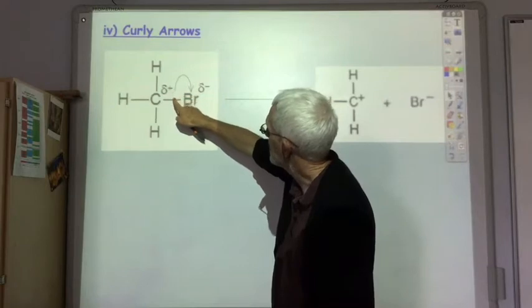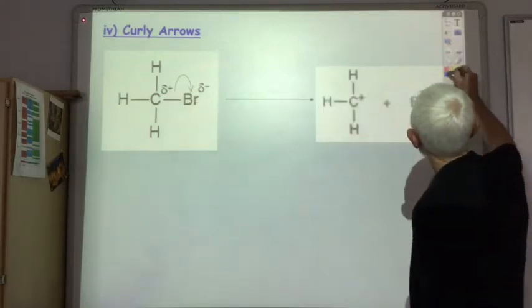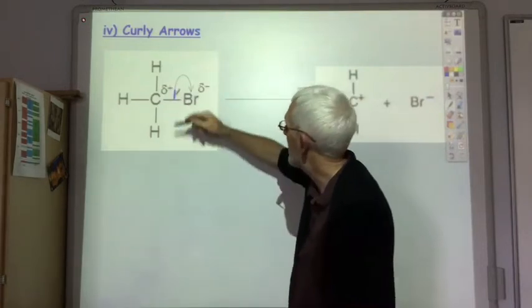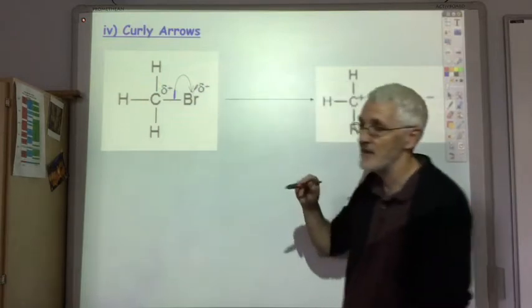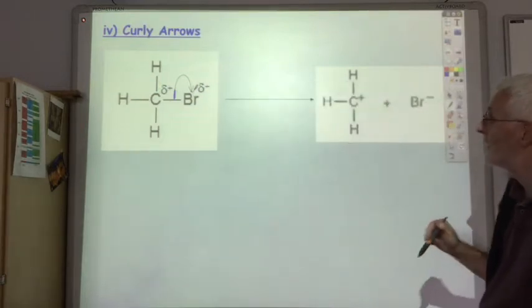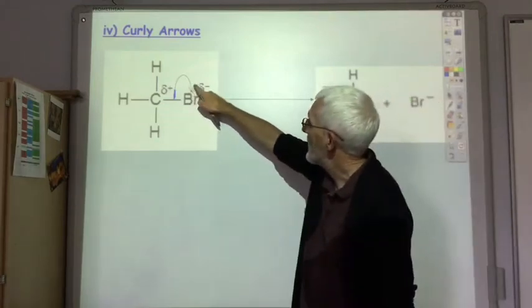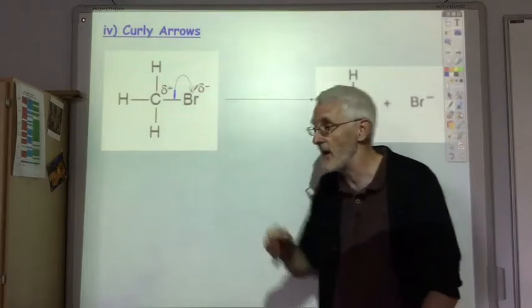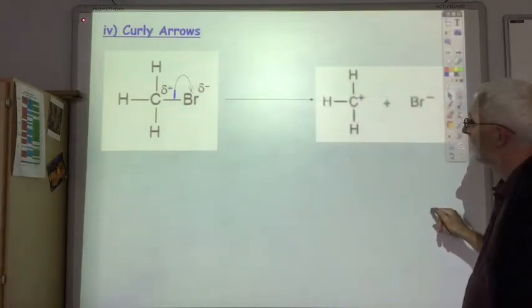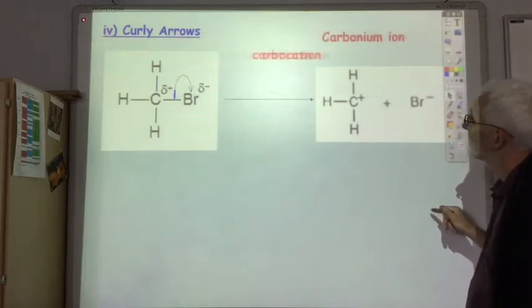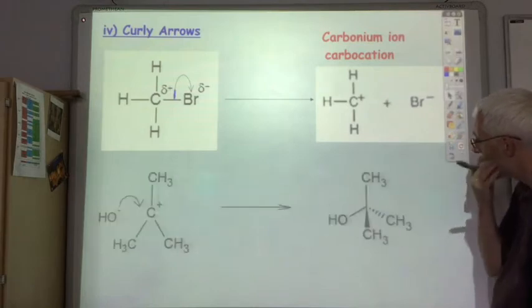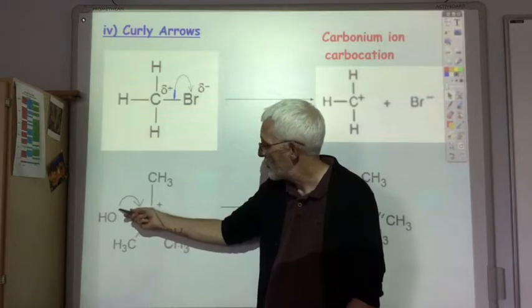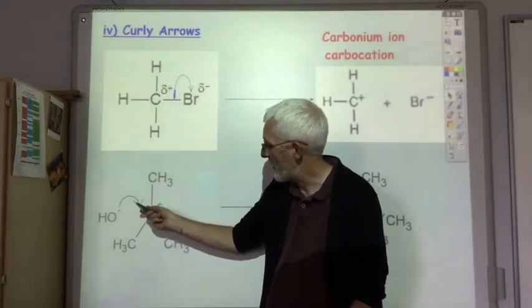So the arrow starts at the covalent bond where the electrons are and it finishes up at the atom those two electrons are moving to. That double head of the arrow indicates two electrons. Each part of the arrow head is one electron.